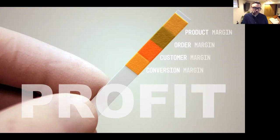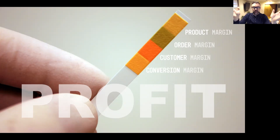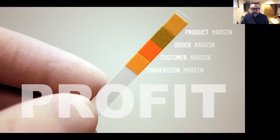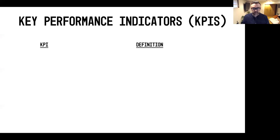And finally, we've got your conversion margin. Think of the funnel of your business — at the very top, you've got a whole bunch of possibilities of people you could drive into your business, and as you whittle things down, hopefully at the end of the day you get some customers driving true revenue for you. That's the profit litmus test. Before we get into each of the individual product, order, customer, and conversion margins, we have to first establish what we would call some key performance indicators, or KPIs.